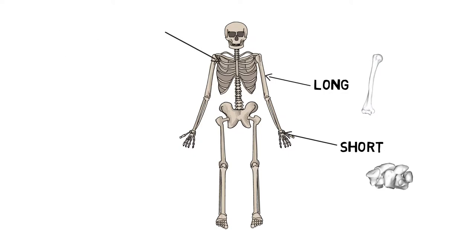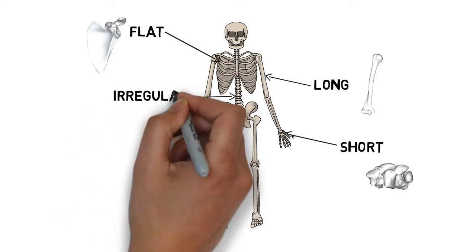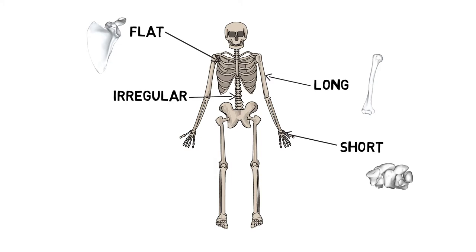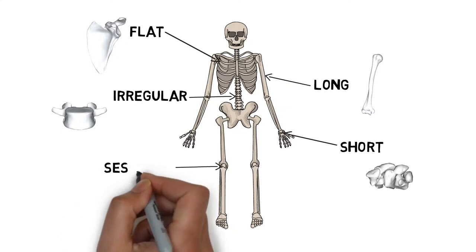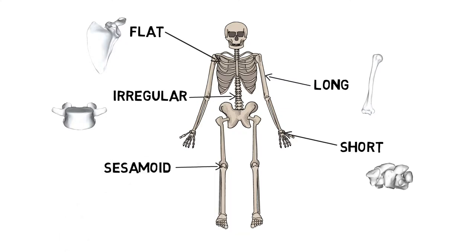Flat bones are strong, thin, flat plates such as the scapula or sternum. Irregular bones are unique and unlike any other type of bone, such as vertebrae or the sacrum. Sesamoid bones are usually short or irregular bones embedded within a tendon, such as the patella.